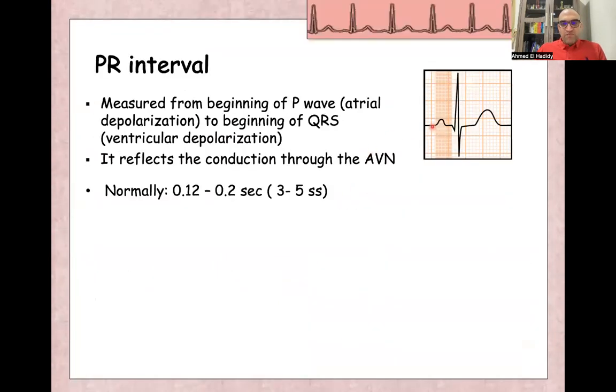After P wave, we'll have PR interval. PR interval is from the beginning of P wave till the beginning of the QRS complex, consists of the P wave itself and PR segment. It represents depolarization of the AV node or conduction of the AV node itself or delay in conduction of the AV node itself. We measure it from P wave, which is atrial depolarization, till the beginning of the ventricular depolarization.